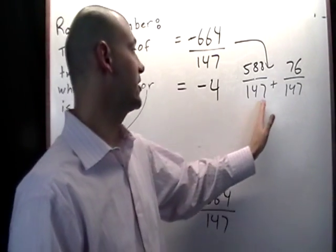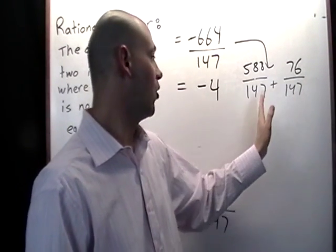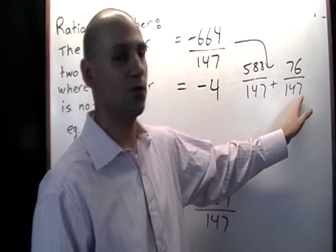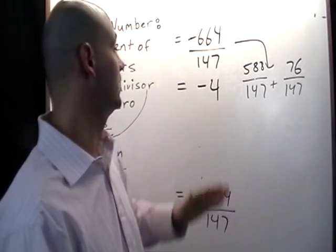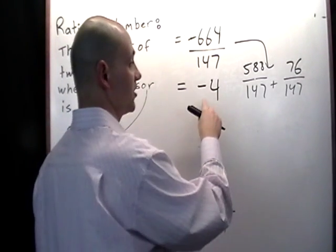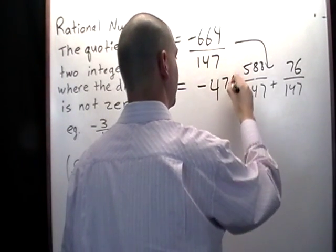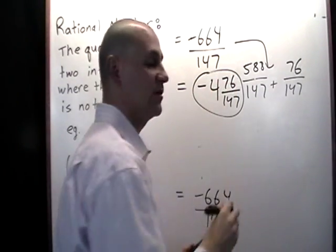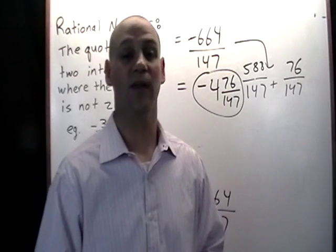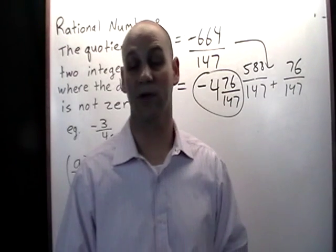So you can see that these two fractions here, 588 over 147 plus 76 over 147, are going to total 664 over 147. So I know now that my answer is going to be negative 4 and 76 over 147 and that's the answer as a mixed number in lowest terms.